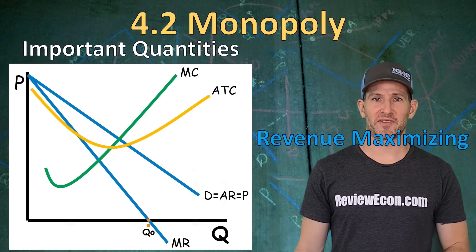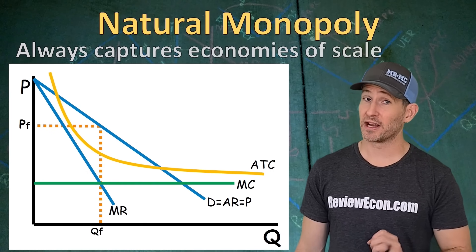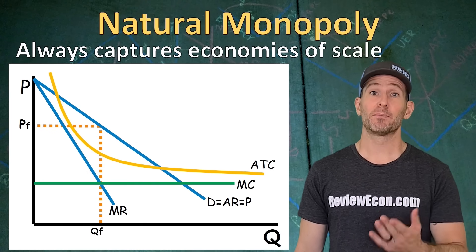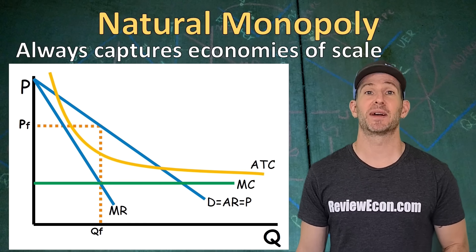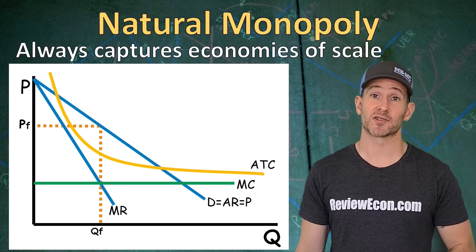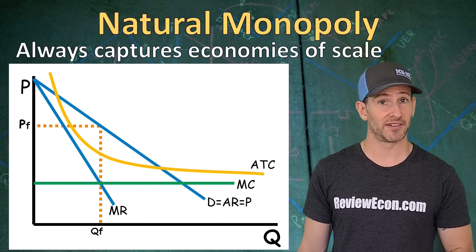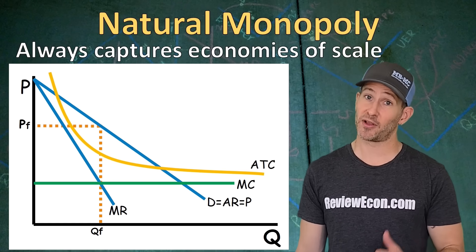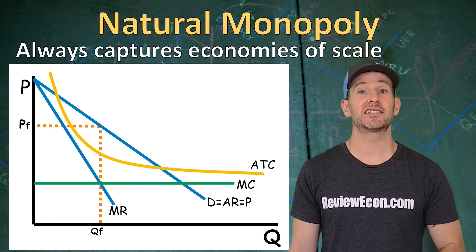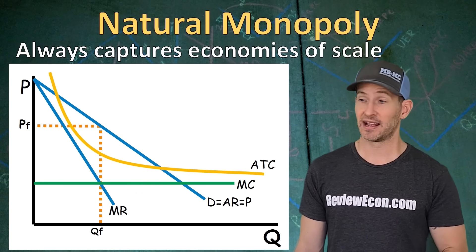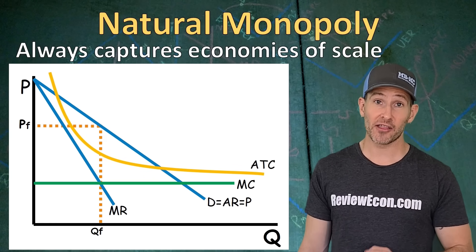There is a special type of monopoly called a natural monopoly. A natural monopoly always captures economies of scale. Public utilities are an example — the most expensive part about providing electricity is putting all the wires around town, but the next unit of electricity is generally cheaper than the previous one. That means the average total cost curve for a public utility tends to be constantly downward sloping. Here is one way to draw a natural monopoly — you should be familiar with it and be prepared to draw it.